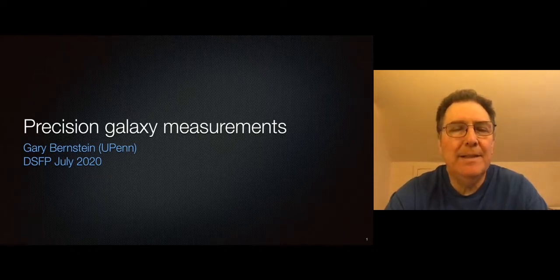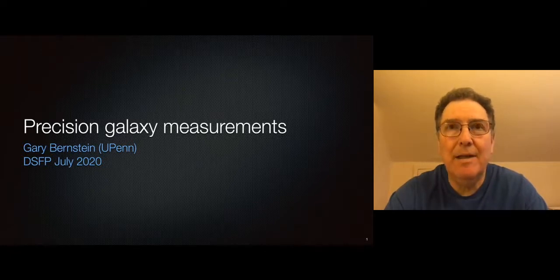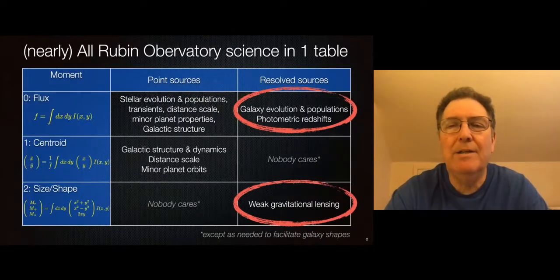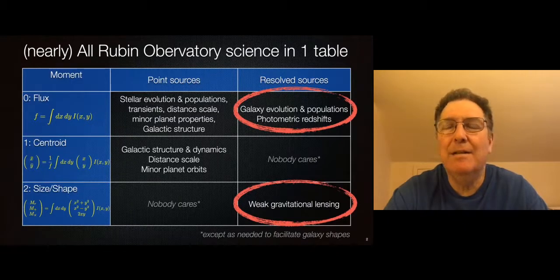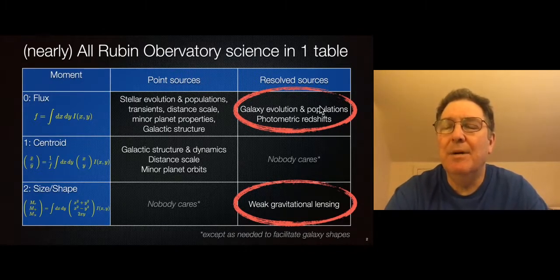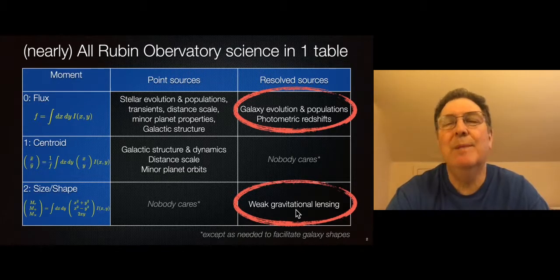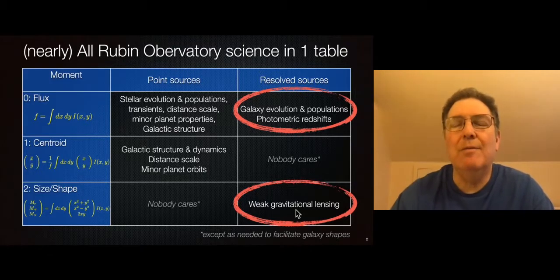Hello again, fellows. This is Gary back, and this time I'm going to talk to you about measuring galaxies rather than measuring stars. To remind you from something I spoke about in the astrometry lecture, we can classify our measurements of point sources and resolved sources into what moment we're trying to measure. The first half of this lecture will be about getting fluxes of galaxies, and then in the second part we'll talk about measuring the shapes and sizes, which is a relatively newcomer to the astronomical measurement world, and we use it for weak gravitational lensing.